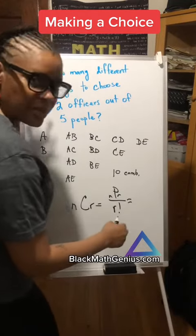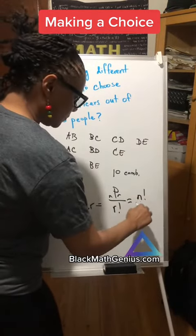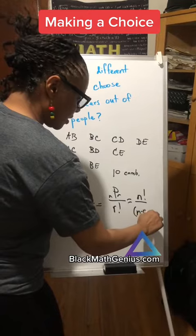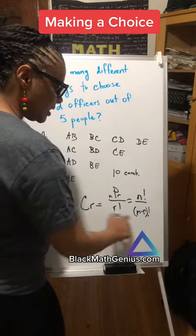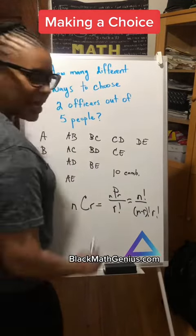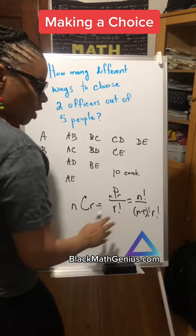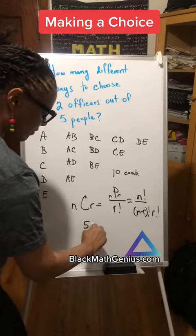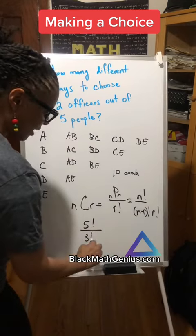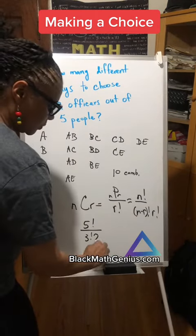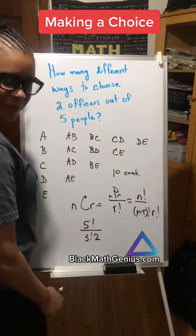So remember NPR is N factorial over N minus R factorial, and then R factorial. And when we do the math on this, we're also going to get 10. So 5 factorial over N minus R, 3 factorial over 2 factorial, which is just 2.